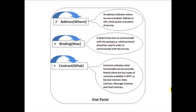Contract indicates what functionality the service provides. Mainly, there are four types of contracts available in WCF: Service Contract, Data Contract, Message Contract, and Fault Contract. This is the pictorial representation of your endpoint.